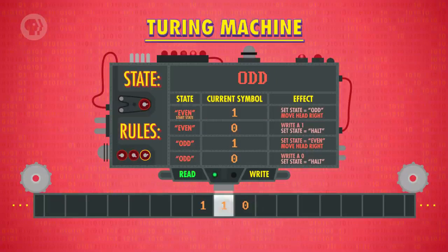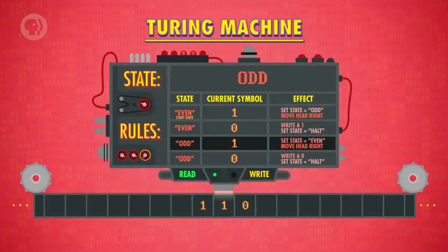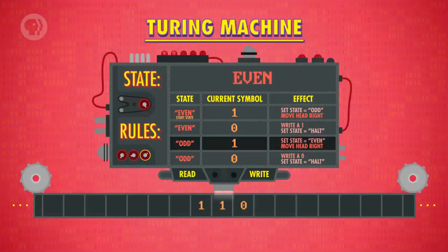Okay, now we see another one on the tape, but this time our state is odd, and so we execute our third rule, which sets the state back to even, and moves the head to the right.